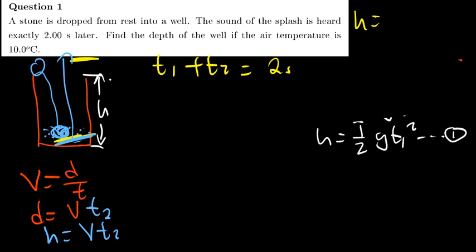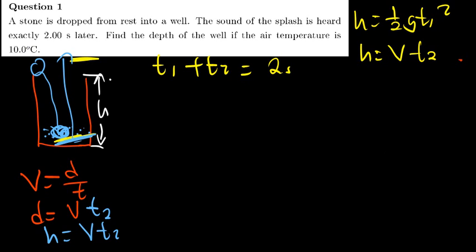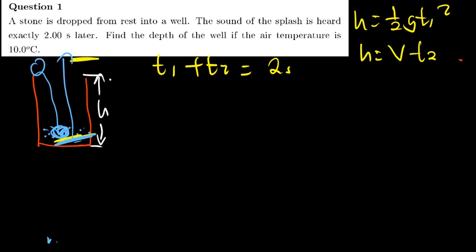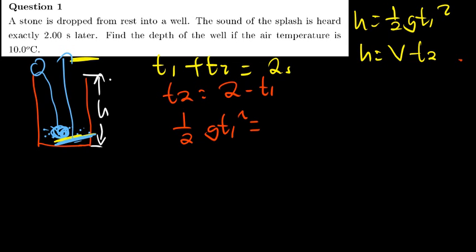I now have two formulas: H = ½GT1² and H = V·T2. Since these two expressions for H are equal to each other, I can equate them: ½GT1² = V·T2. I need to express T2 in terms of T1. Since T1 + T2 = 2, we get T2 = 2 − T1.